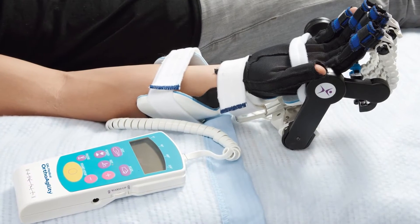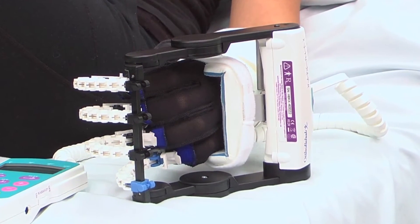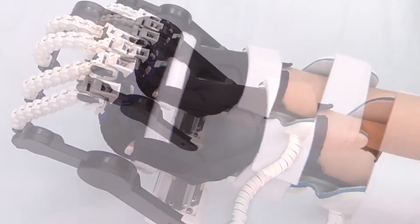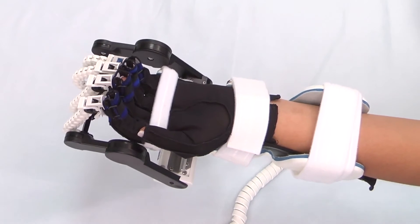The 6000X WaveFlex Hand CPM Unit is designed to provide composite fist flexion to the hand. Lightweight and easy to use, the WaveFlex is ideal for both home and clinical settings.